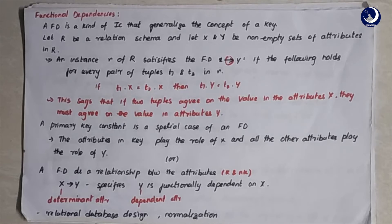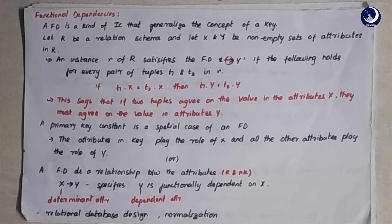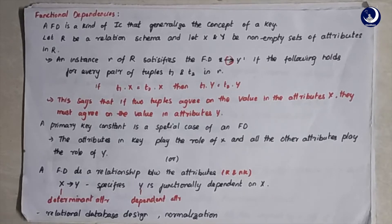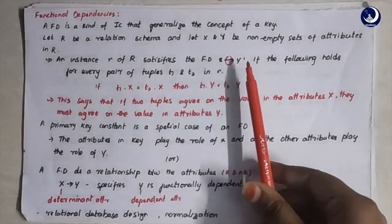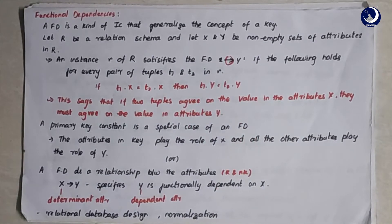Let's suppose a relational schema R, and let X and Y be non-empty sets of attributes in that schema. For example, in a students table with student ID, name, age, and contact number, X might contain student ID and name, while all leftover columns form Y. An instance of the relational schema satisfies the functional dependency X defines Y — where the arrow operator symbolizes functional dependency — meaning X derives Y.